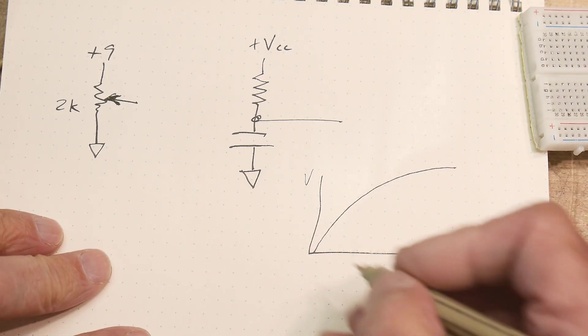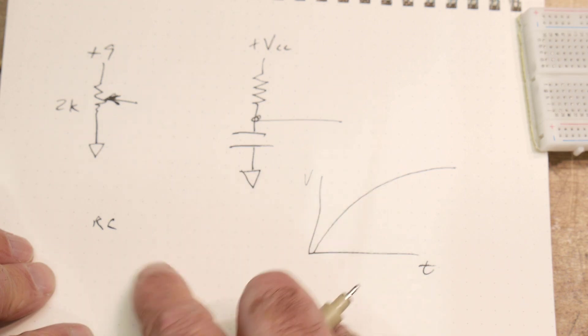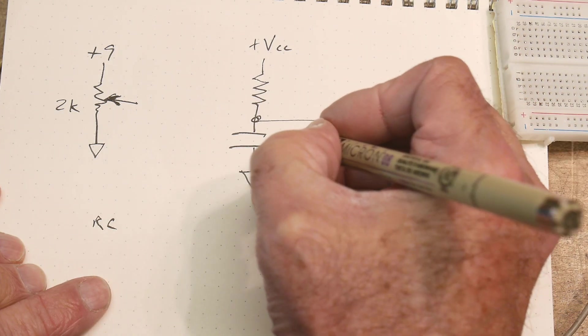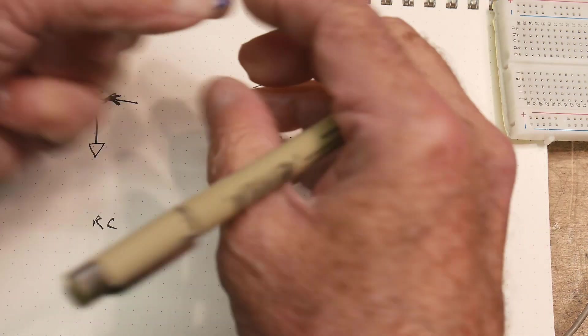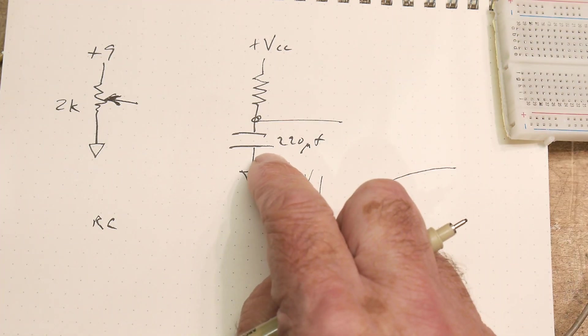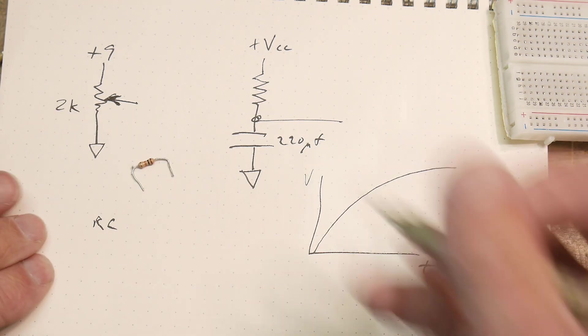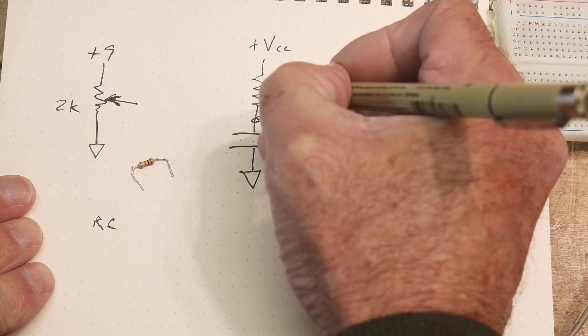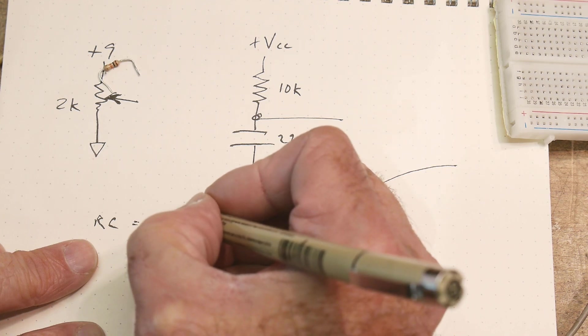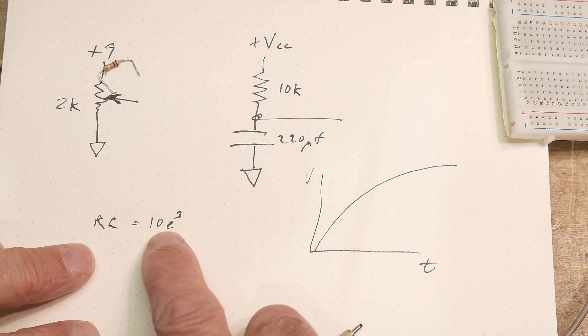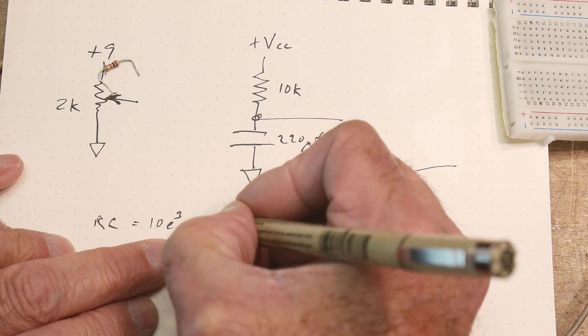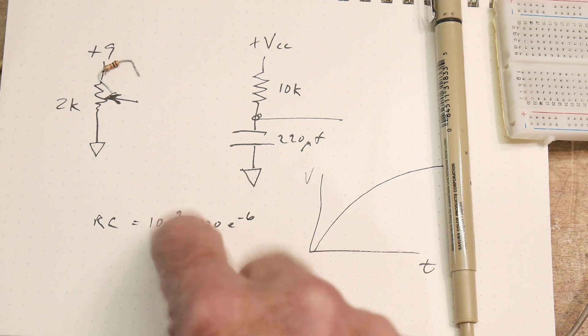So how fast will it charge? Well, that is the RC time constant, which is R times C. So I'm going to put on the breadboard a circuit that has a 220 microfarad capacitor. And I'm going to be using a 10K resistor. So in our formula here, we have 10 times E to the 3.